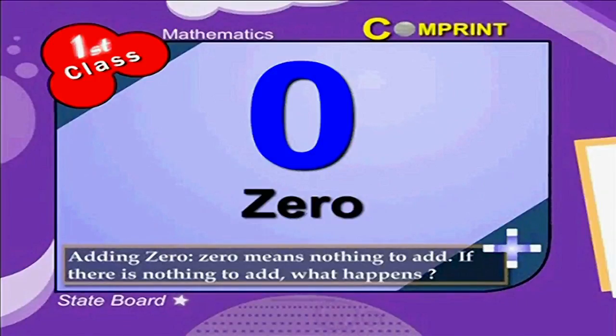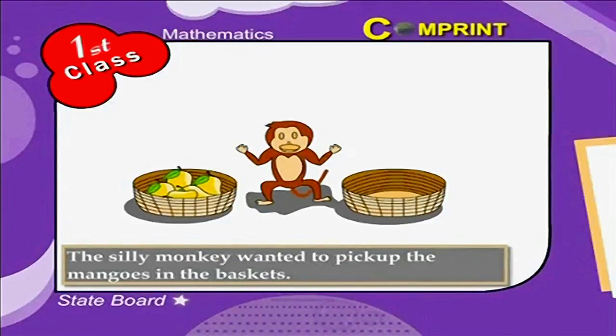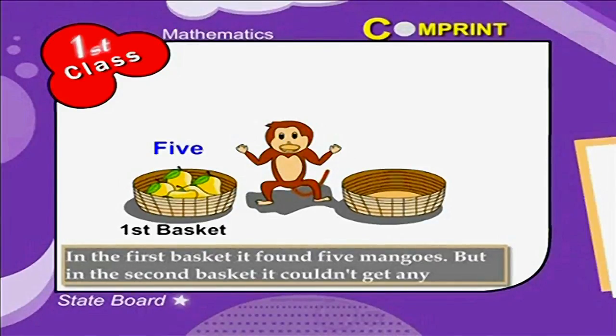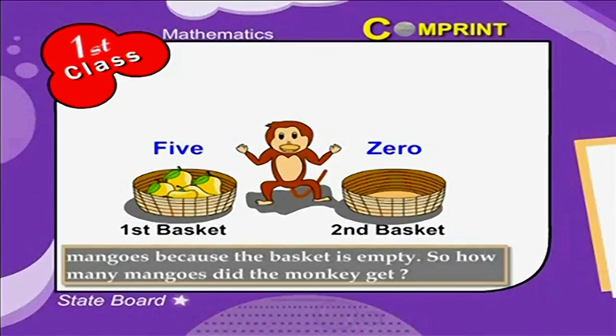Zero means nothing to add. If there is nothing to add, what happens? Look at the example. The silly monkey wanted to pick up the mangoes in the baskets. In the first basket it found five mangoes, but in the second basket it couldn't get any mangoes because the basket is empty.